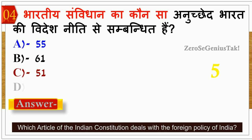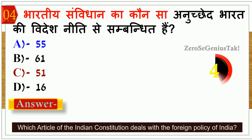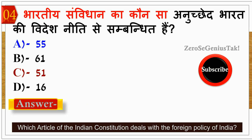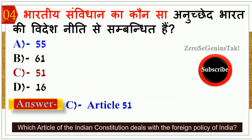The next question is about which article of the constitution is related to the British government. The correct answer is Article 51.